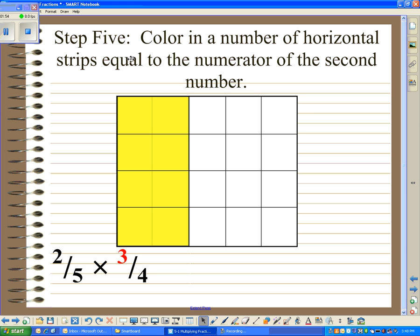Step five is to color in a number of horizontal strips equal to the numerator of the second number. The numerator of the second number is three. So I'm going to color in three horizontal strips. And again, my coloring is maybe not world-renowned, but perhaps just the pride of Mrs. Mashburn.